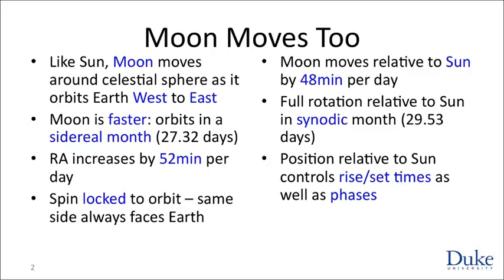Since our clocks are attuned to the sun, this tells us that the moon rises on average 48 minutes later each day than it did the day before, and sets 48 minutes later than it set the day before. The relative orientation of Earth, sun, and moon therefore repeats, but with a period longer than a sidereal month, because that changes not by 52 minutes per day but only by 48 minutes per day.